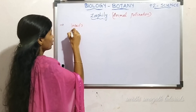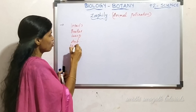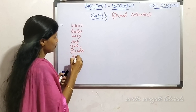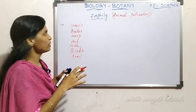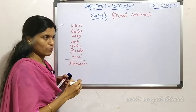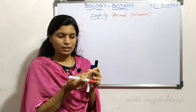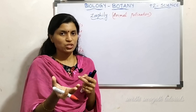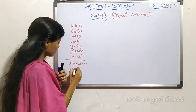Insects that act as pollinators include beetles, wasps, bees, and moths. Birds, snails, and other biotic agents are also common in zoophily. Humans act like grazing animals and help pollination. If you have a garden, you can also facilitate zoophily.